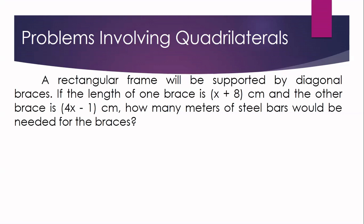A rectangular frame will be supported by diagonal braces. If the length of one brace is quantity x plus 8 centimeters, and the other brace is quantity 4x minus 1 centimeters, how many meters of steel bars would be needed for the braces? The first thing you have to identify is what quadrilateral is stated in the problem, and second, what theorem can you apply to answer it.